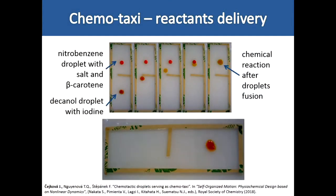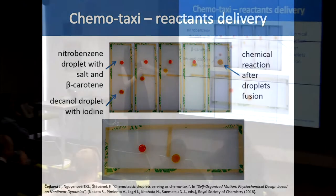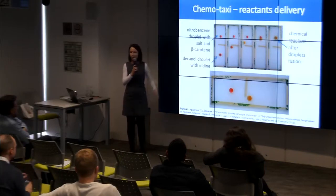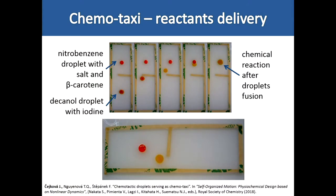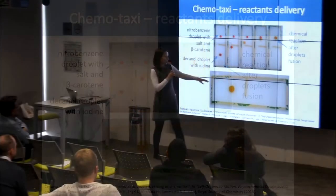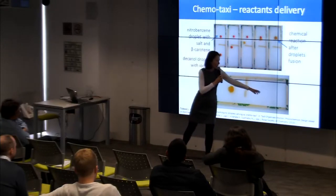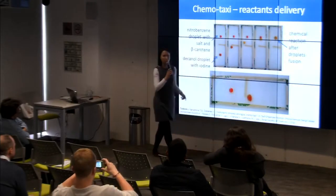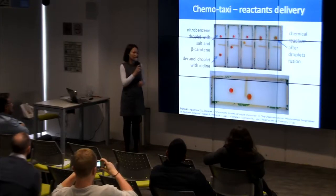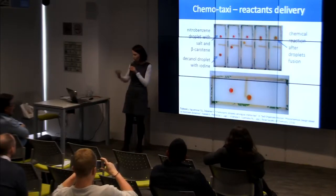The droplet can also transport chemicals. Here is an example where a droplet with one reactant was able to find a second droplet with another reactant, and after the fusion of these two droplets, a chemical reaction occurred. This is an example of how we can use these chemotactic droplets — for instance, for intelligent cleaning: imagine there is some poison, and the decanol droplet carries something that neutralizes that poison, finds it, and destroys it via a chemical reaction.